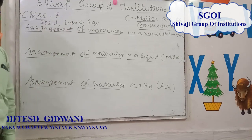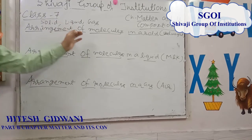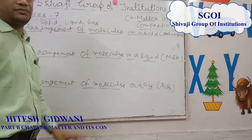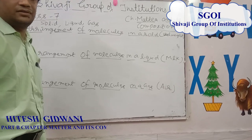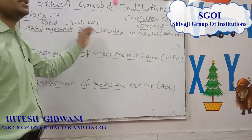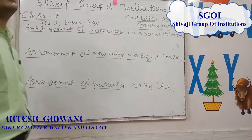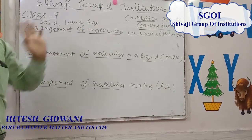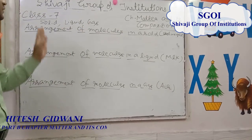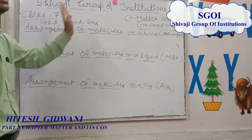In case of gas, it has neither definite shape nor definite volume, and it has no free surface. So we have three states of matter: solid, liquid, and gas.